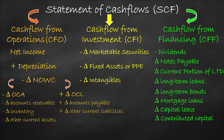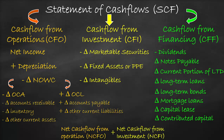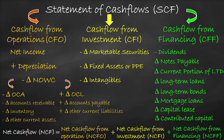Finally, we add the net cash flow from operations, net cash flow from investment, and net cash flow from financing in order to get the total net cash flow. Net cash flow shows the change in cash between two consecutive years.